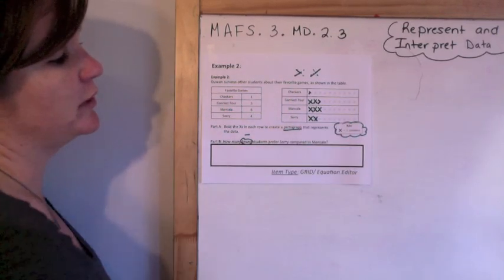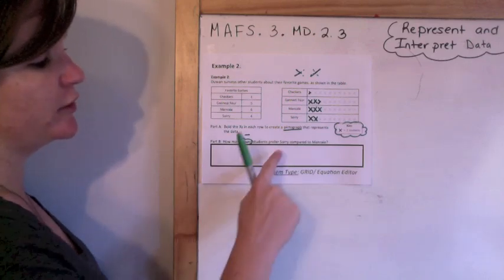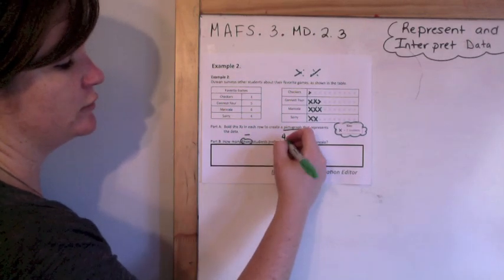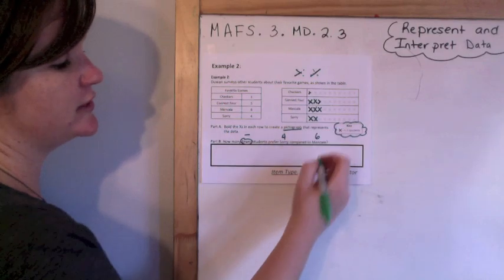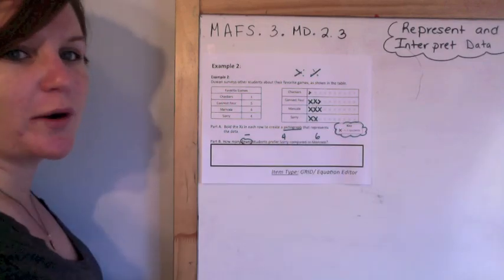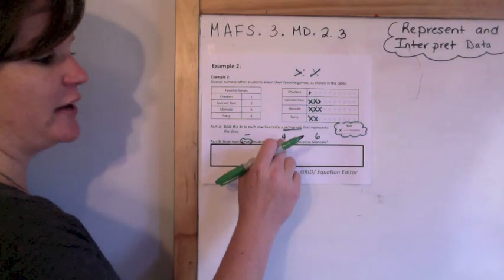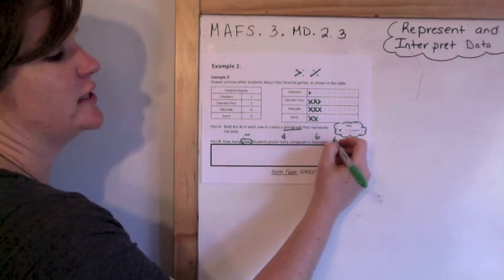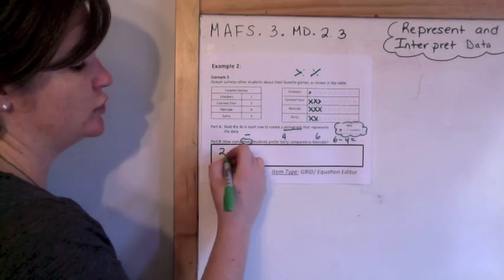How many fewer students prefer Sorry, which is four, compared to Mancala, which is six? So I'm not doing four minus six. I'm trying to see how many fewer this one is, so six minus four, which equals two students.